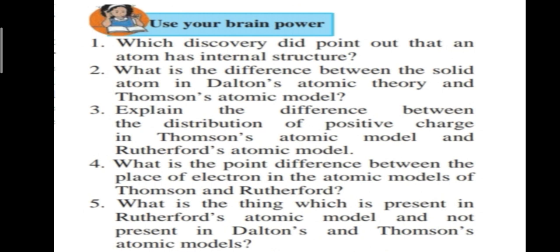Second question: what is the difference between the solid atom in Dalton's atomic theory and Thomson's atomic model? According to Dalton's atomic theory, an atom is a hard solid sphere with no internal structure - it is indivisible and indestructible. According to Thomson's atomic model, an atom consists of negatively charged particles called electrons which are embedded in a positively charged sphere.